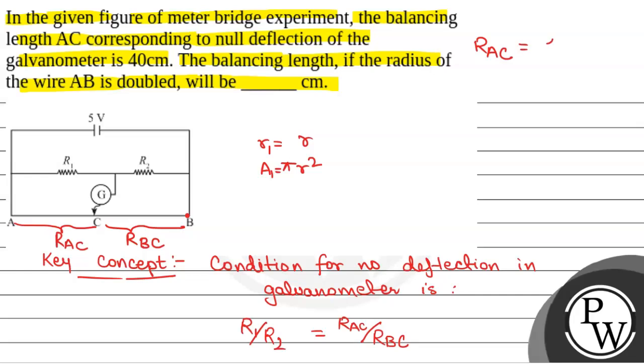RAC will be equal to Rho into length of AC by pi R square, and RBC will be equal to Rho into length of BC by pi R square.